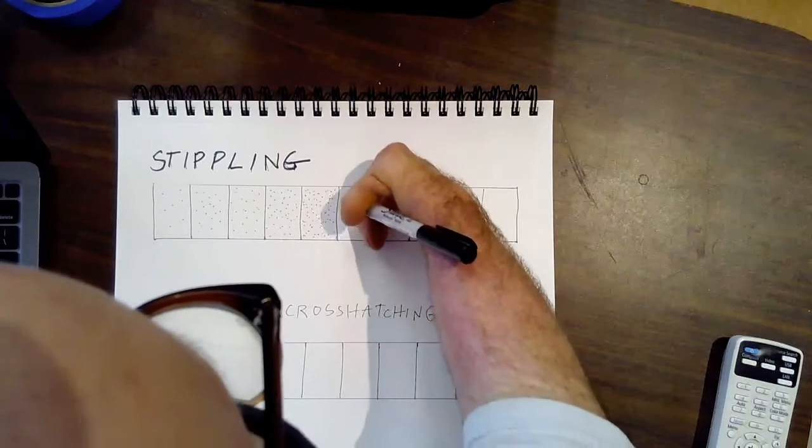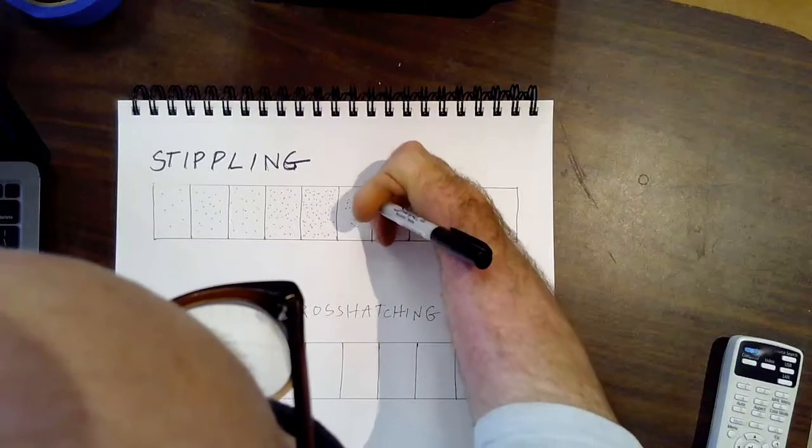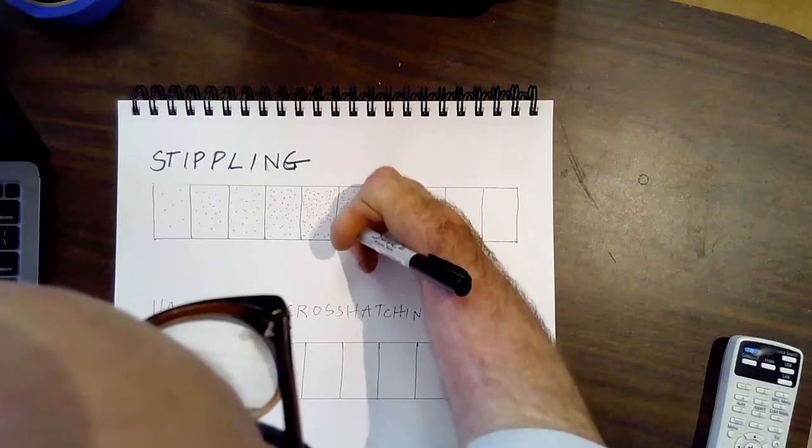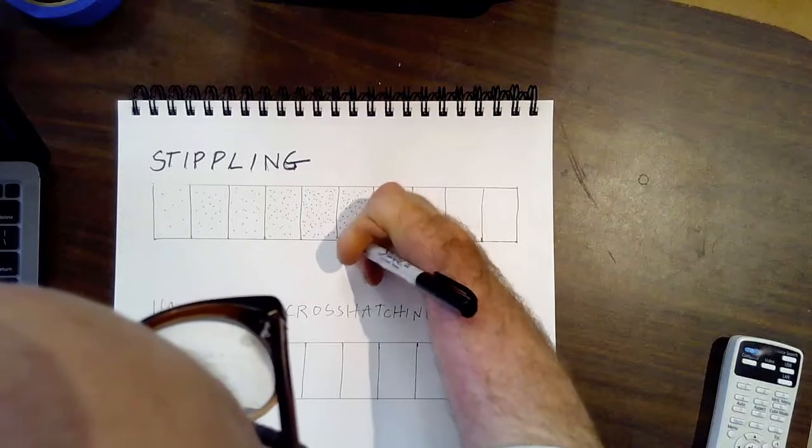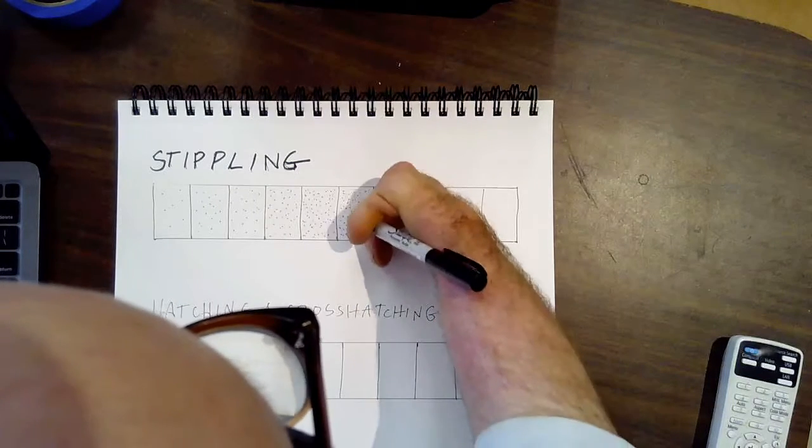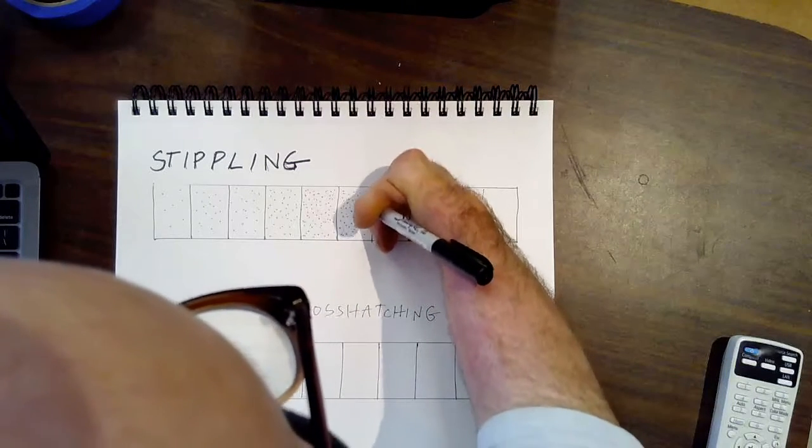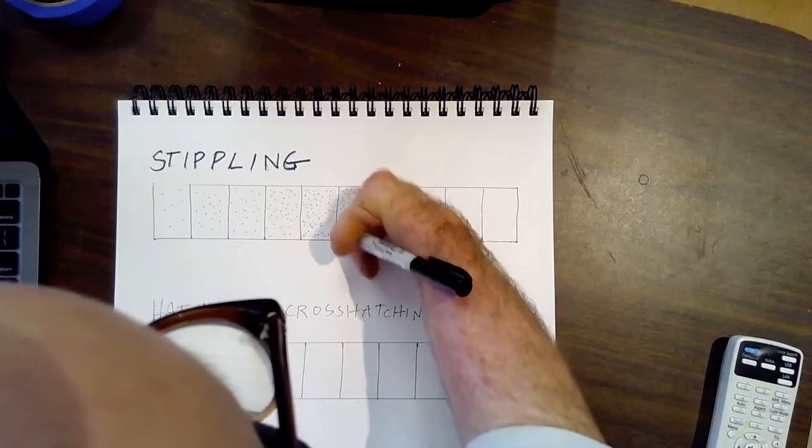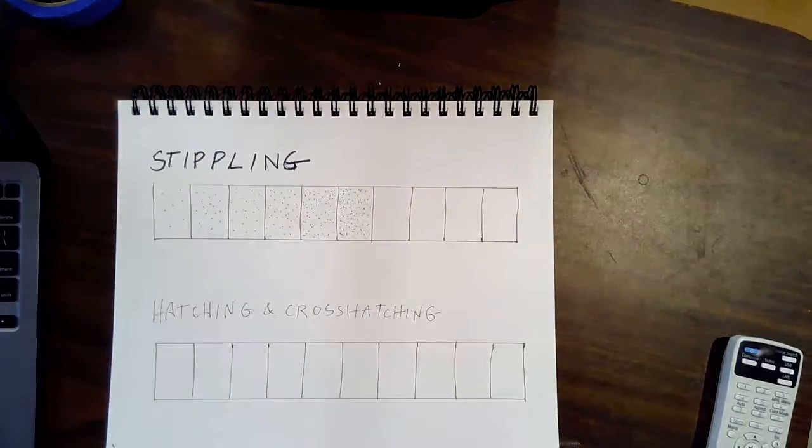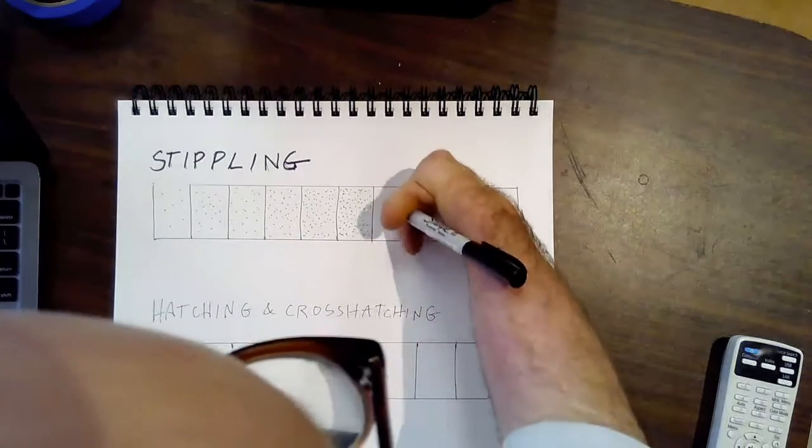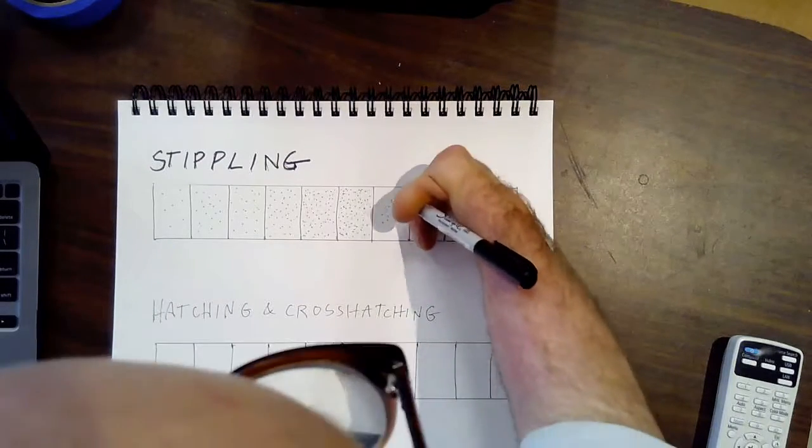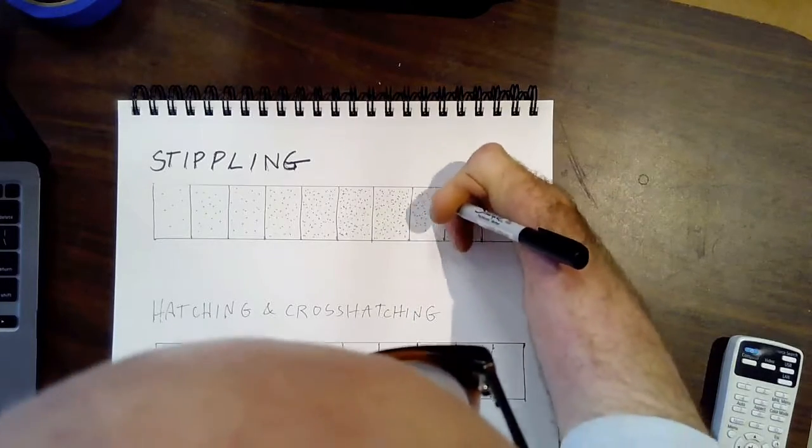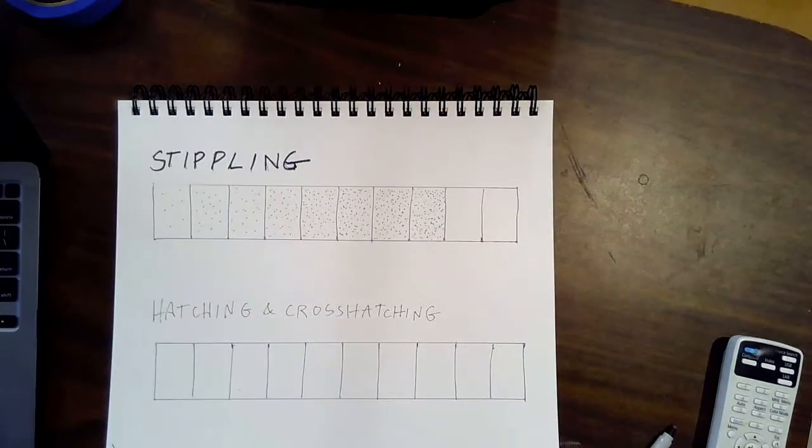And then as you get further along, by the time you get towards the end of the value scale, you should have a good sense of whether you've distributed your dots evenly because the point here is to have a pretty even gradient of concentration of dots, right? There you go.